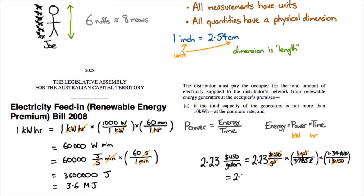And so we end up with 2.23 times 1.34 divided by 3.785 and our final unit is Australian dollars per litre which is the unit I'm used to seeing on petrol pumps so I'll be able to understand whether that's a big or a small number.